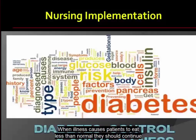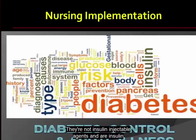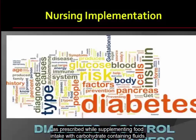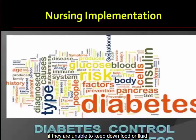When illness causes patients to eat less than normal, they should continue to take oral hypoglycemic medications, non-insulin injectable agents, and insulin as prescribed, while supplementing food intake with carbohydrate-containing fluids such as low-sodium soups, juices, and regular decaffeinated soft drinks. It is important to tell the patient to contact a healthcare provider if they are unable to keep down food or fluid.